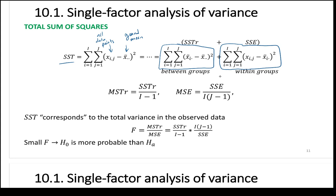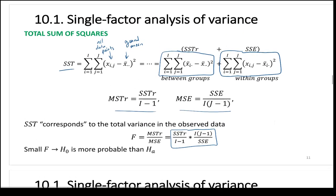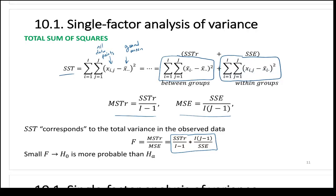Focus on calculating SSTR and SSE, then add them to get SST. MSTR is calculated as SSTR divided by I minus 1. MSE is SSE divided by I times J minus 1. Then the F test statistic is their ratio. A small F means H-zero is more probable. We compare the p-value to a significance level, just as in other tests.